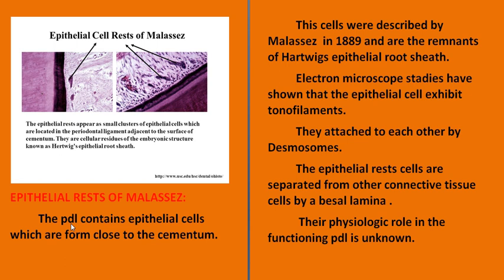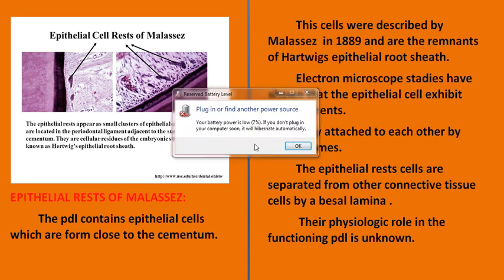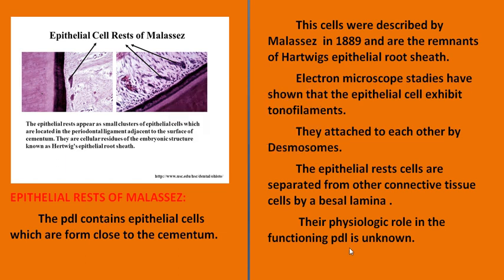In summary, the epithelial cell rests of Malassez are described by Malassez in 1889. Each exhibits tonofilaments, they are attached to each other by desmosomes, separated from other connective tissue cells by basal lamina, and their physiologic role is unknown.